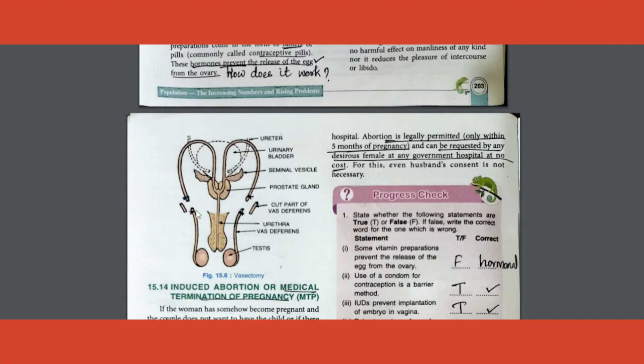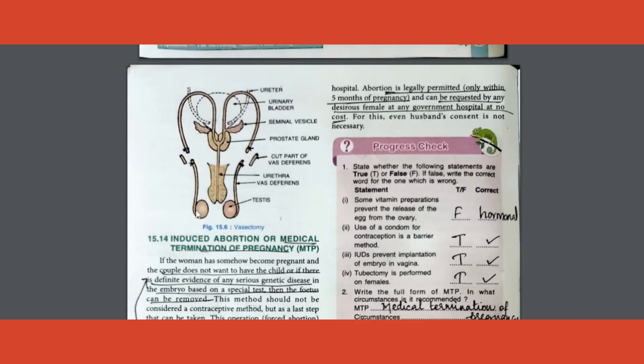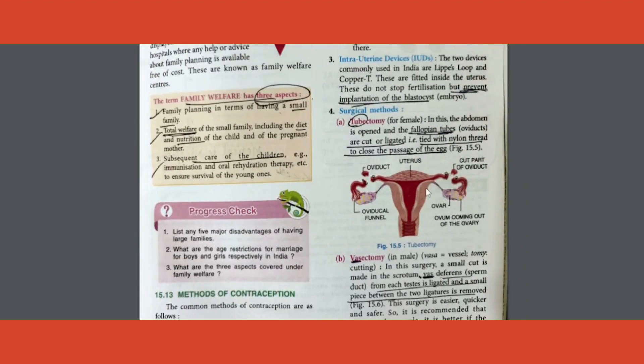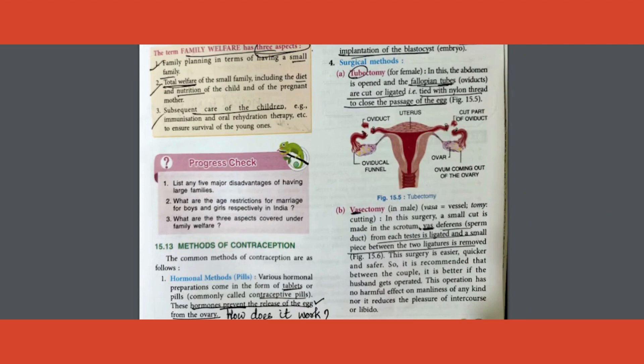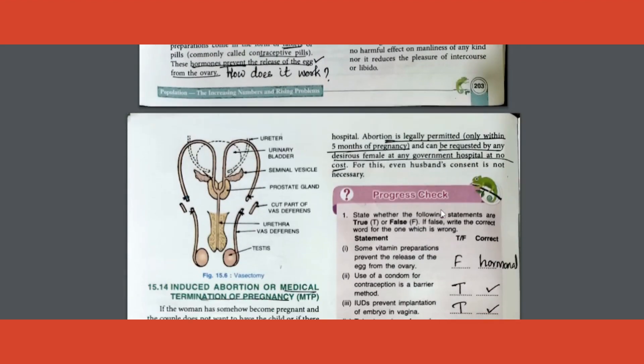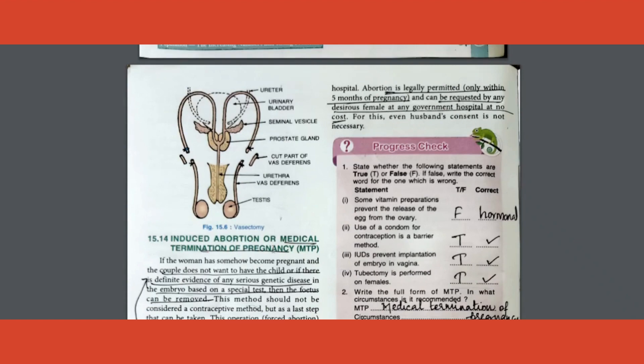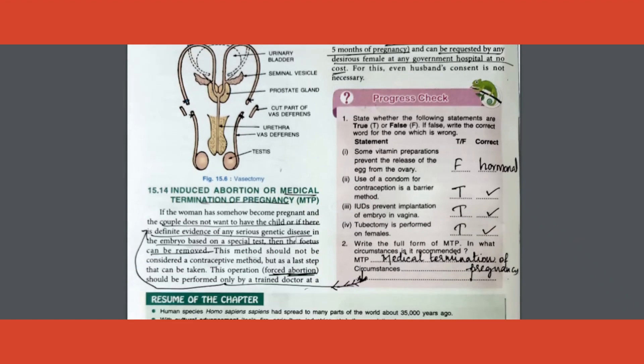So these two methods, differentiate between question can come, or a diagram-based question where they show this diagram or the other diagram. What kind of method it is? You have to write where is it happening, what does it prevent, what is the function, is it permanent or not. Such questions can come. Definitely it is a permanent type of method.